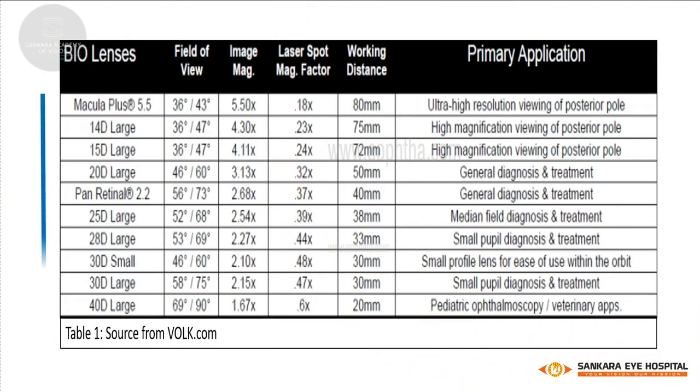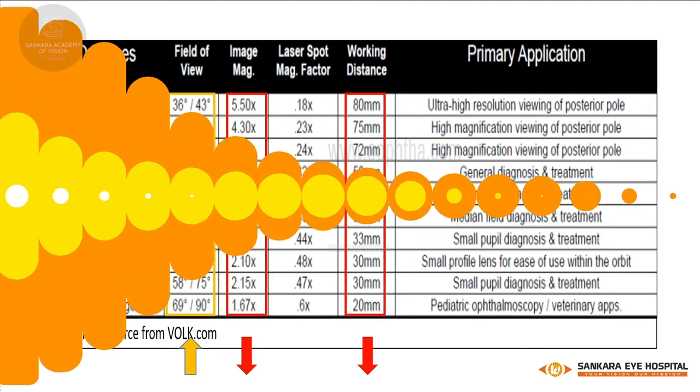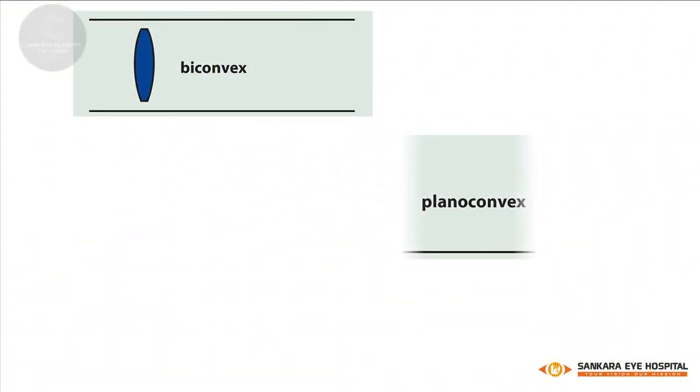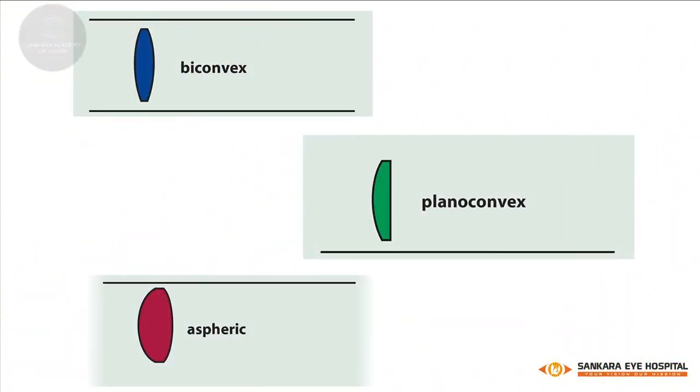As the power of the condensing lens increases, the field of view increases, but image magnification and working distance decrease. The surface of lenses could either be biconvex, planoconvex, or aspheric to avoid spherical aberrations during the examination.